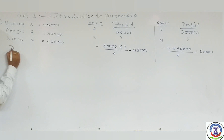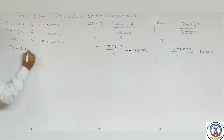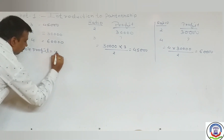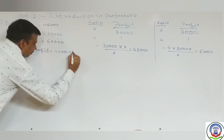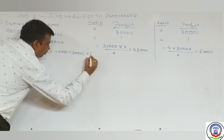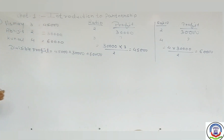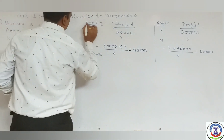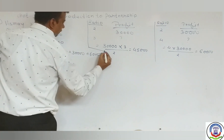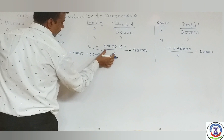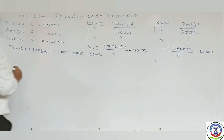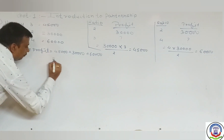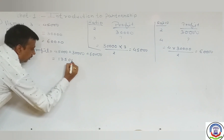Total divisible profit equals 45,000 plus 30,000 plus 60,000, which gives a total divisible profit of rupees 1,35,000.